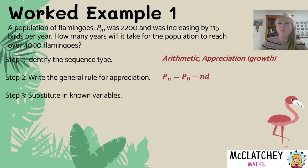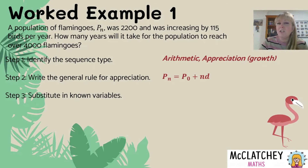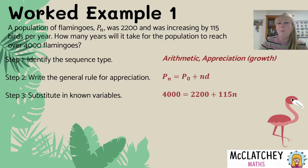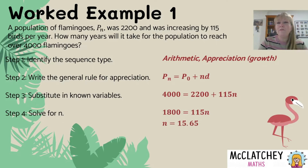We substitute in our known variables. The starting population is P0 equals 2,200. If you want to use the general rule from your formula sheet, which has term one, you'd need to add 115 first, giving term one as 2,315, and then use the rule with N minus one. But since we're starting at time zero and finding the value at the end of the year, we remove the N minus one and just use N. Our value for D is 115. We also know PN needs to reach 4,000, and what we're finding is the value of N — how many years.